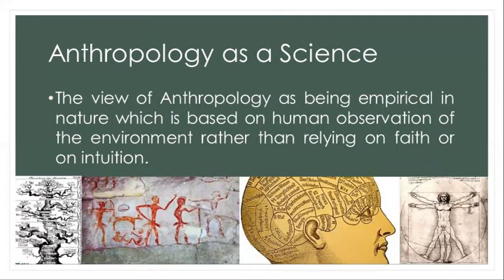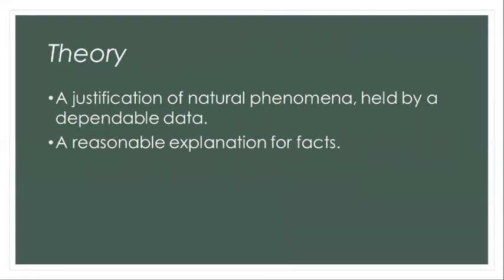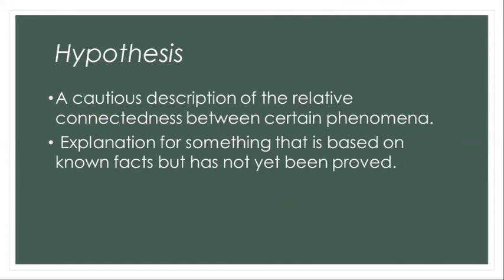Anthropology as a science. The view of anthropology as being empirical in nature is based on human observation of the environment rather than relying on faith or intuition. A theory is a justification of natural phenomena held by dependable data — a reasonable explanation for facts. A hypothesis is a cautious description of the relative connectedness between certain phenomena, an explanation based on known facts but not yet proven.